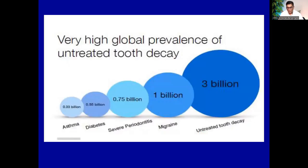When we consider the global prevalence of all diseases, number one is untreated tooth decay, affecting three billion people in the world. Second is migraine, affecting one billion. Then 0.75 billion are affected by severe periodontitis — again an oral condition — fourth is diabetes, and fifth is asthma. Two major dental diseases are among the top five most prevalent diseases globally.